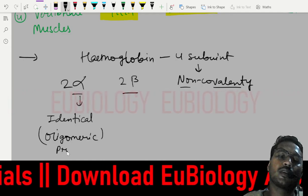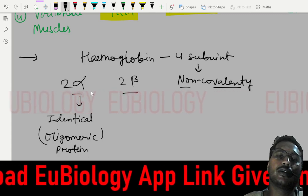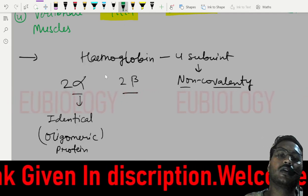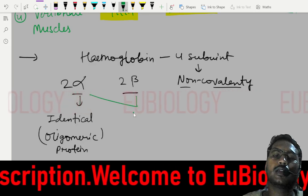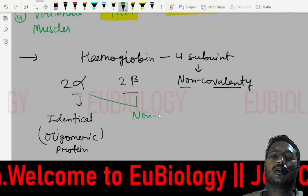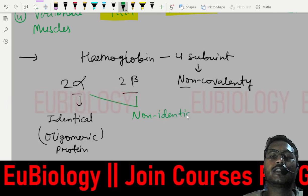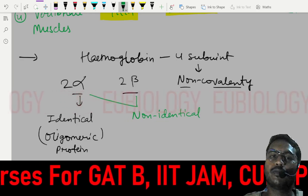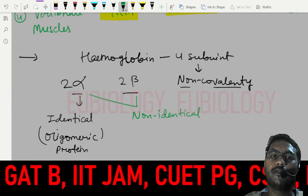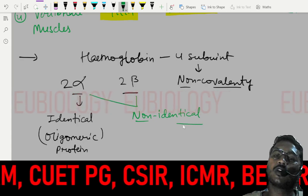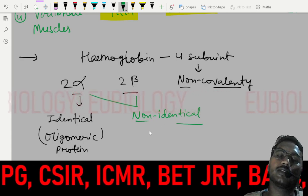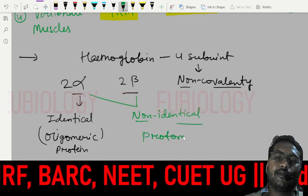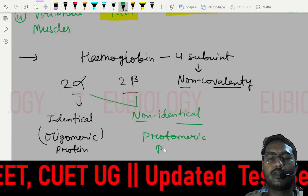For the same hemoglobin, the alpha and beta chains are non-identical — there is a change in the amino acid sequence, giving different peptides. When non-identical subunits are bound non-covalently, the protein is called a protomeric protein.